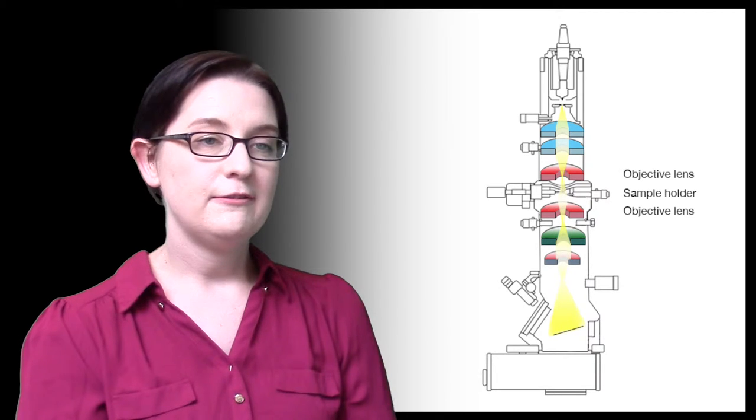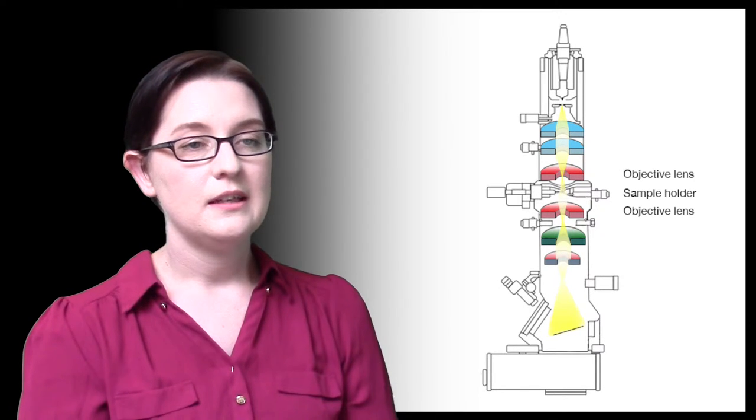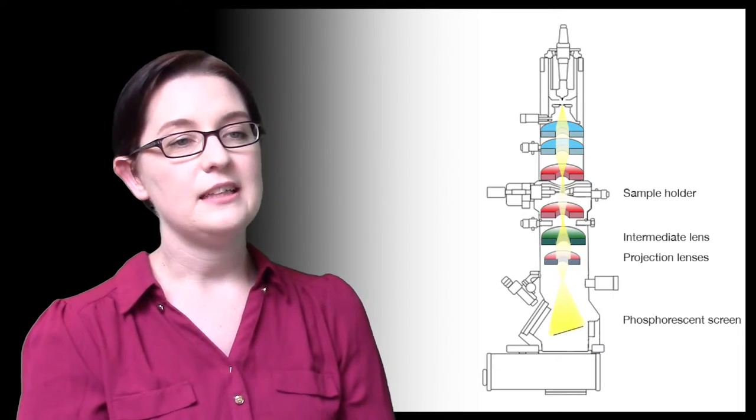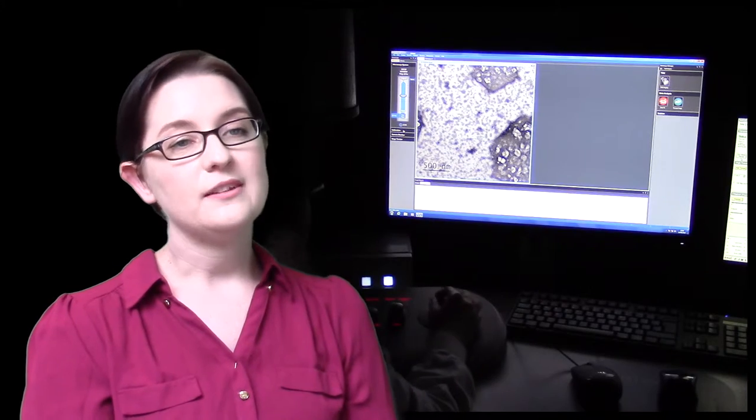Contrast is generated by differential scattering of electrons, and then the intermediate and projection lenses further magnify the image. When the electrons hit the phosphorescent screen in the projection chamber, photons are generated which allow the human eye to view it.